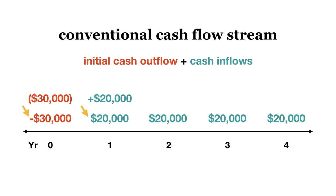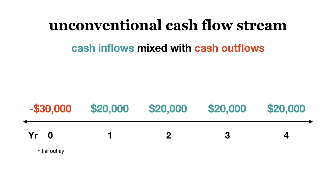It is crucial to not be sloppy with cash flow signs, as capital budgeting problems can quickly become complex. Unconventional cash flow stream: an unconventional cash flow stream can involve cash inflows mixed in with cash outflows throughout the life of the project. Using the same example, but adding one change — in year three, we need to make a capital expenditure of $25,000. Thus, our cash flow for year three will be the $20,000 cash inflow minus the $25,000 cash outflow, giving us a net outflow of $5,000.